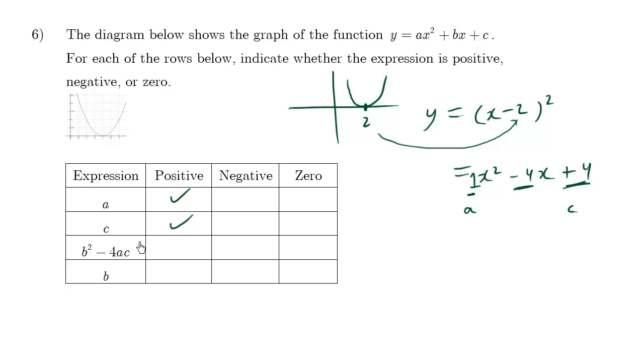b-squared minus 4ac. Recall that b-squared minus 4ac is the discriminant. If you look up your quadratic formula, you have this part that says square root of b-squared minus 4ac. When b-squared minus 4ac is less than zero, we have a negative square root, a square root of a negative number which is imaginary. So there's no solutions, zero solutions. However, when this value is greater than zero, then there's always two solutions.